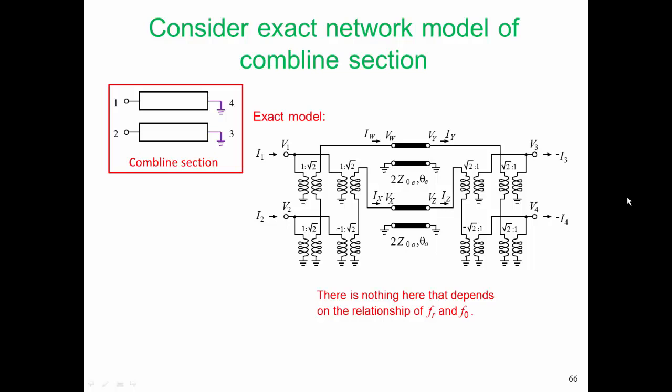Let's consider this circuit here. This is the exact model for the combline section shown in the top left there. So this comes directly from the equations describing the transmission line properties of the line. We see here that we have a transmission line on the top here, which has an even mode characteristic impedance. The second line has an odd mode characteristic impedance. And the transformers shown here combine the characteristics of those lines such that we end up with the right characteristics—that is, the right transmission line equations—for our parallel coupled lines.